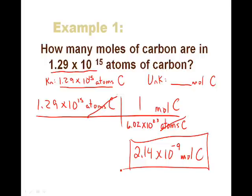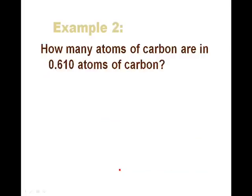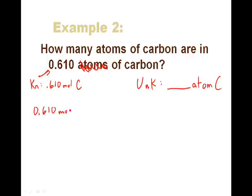Now we can make the opposite kind of calculation by saying how many atoms of carbon are in - this is a typo, this should have been moles - how many atoms of carbon are in 0.610 moles of carbon? In other words, this right here is the thing we know: 0.610 moles of carbon. And the unknown is how many atoms of that? How many atoms of carbon is in that many moles? So we're just going to start with 0.610 moles of carbon.